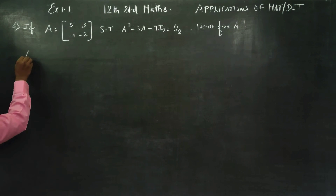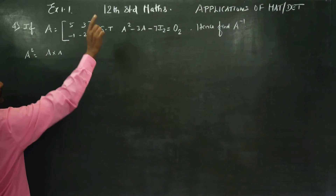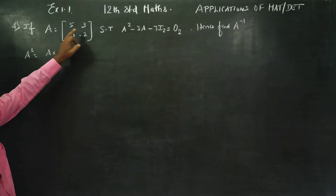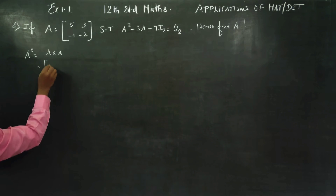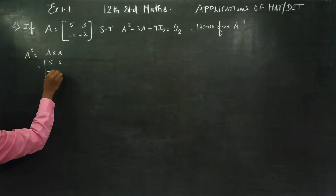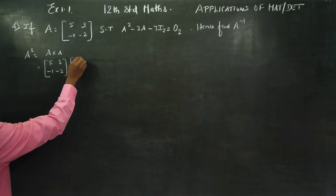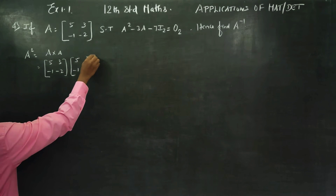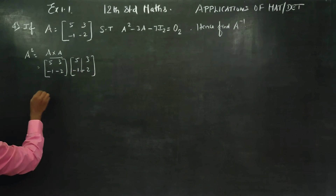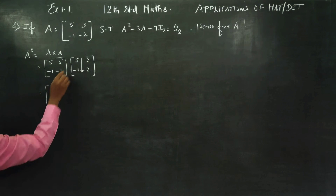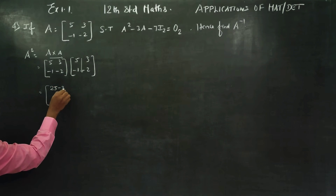First of all I will find A². A² means A into A — the whole square in matrix. You can see matrix A is equal to [5, 3; -1, -2], again [5, 3; -1, -2]. Matrix multiplication is equal to row into column: 5×5 is 25, 3×(-1) is -3.